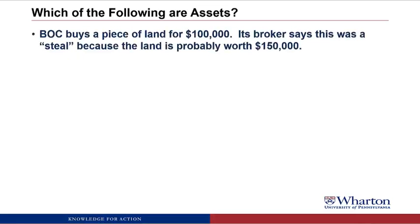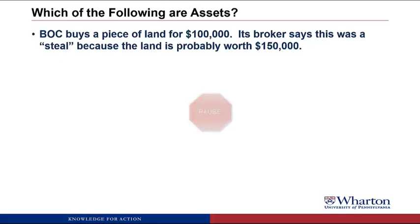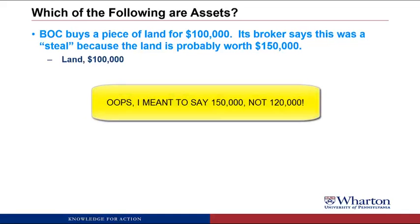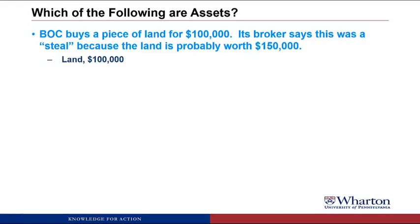BOC buys a piece of land for $100,000. Its broker says this was a steal because the land is probably worth $150,000. This is an asset because we acquired the land in a market transaction — we'll call the asset land. The value of the benefits is assumed to be $100,000, what we paid, not the $150,000 the broker says it's worth, because that wasn't based on a market transaction.